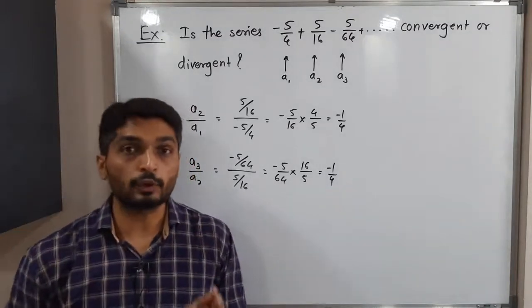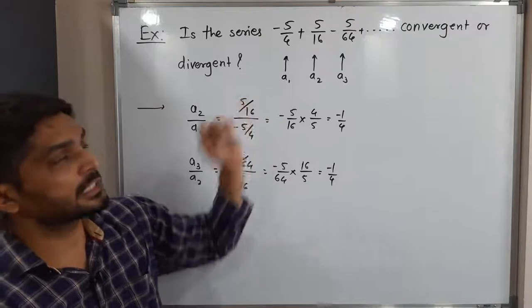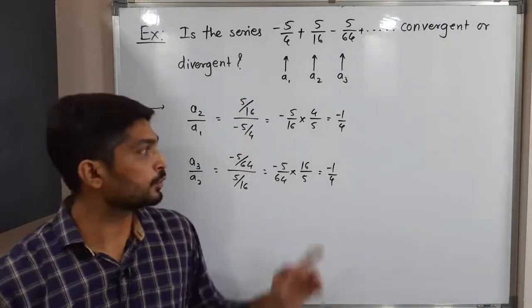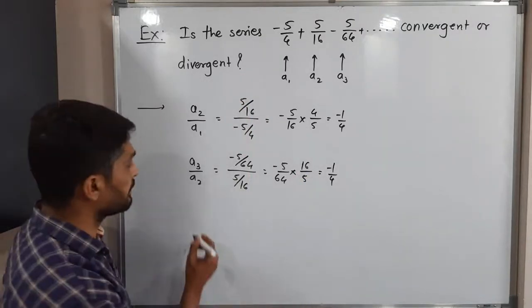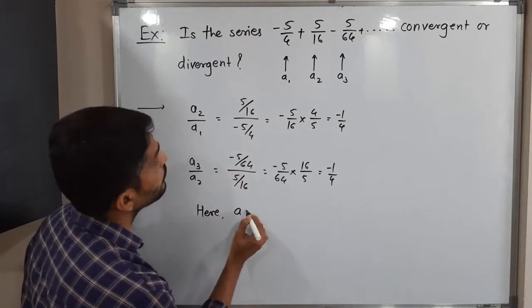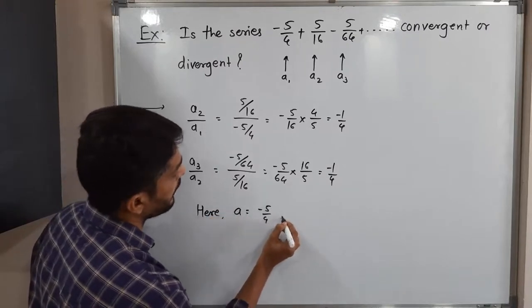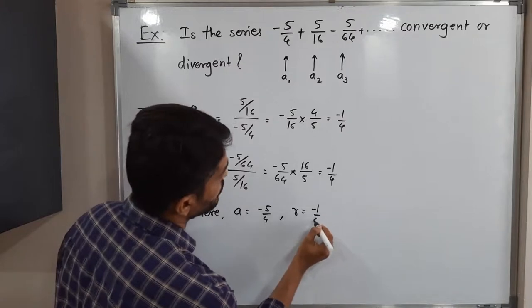So that means, yes, 100% it is a geometric series with a first term minus 5 by 4. And what is the common ratio? Minus 1 by 4. So let me mention here first term A is equal to minus 5 by 4 and the common ratio R is minus 1 by 4.